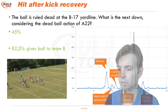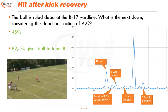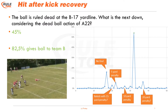Let's have a look at the graph of the yard lines. Quite a number of you — almost 20% — actually gave the ball to Team B at the 17 yard line, so they thought this was a legal contact play by the kicking team player.